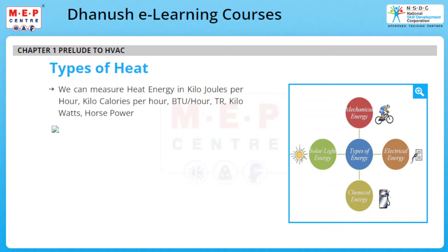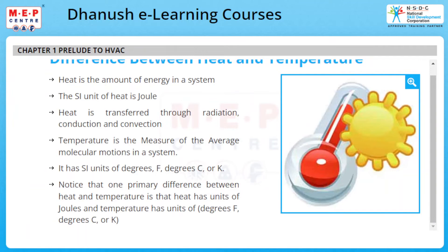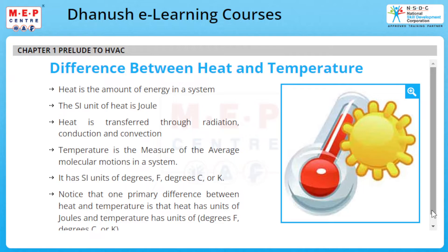Up to here we discussed about what is heat and temperature. Now we will learn about the difference between heat and temperature. There is a fundamental difference between temperature and heat. Heat is the amount of energy in a system. The SI unit of heat is Joule. A Joule is a Newton times a meter; a Newton is a kilogram meter per second squared. Heat is transferred through radiation, conduction, and convection.